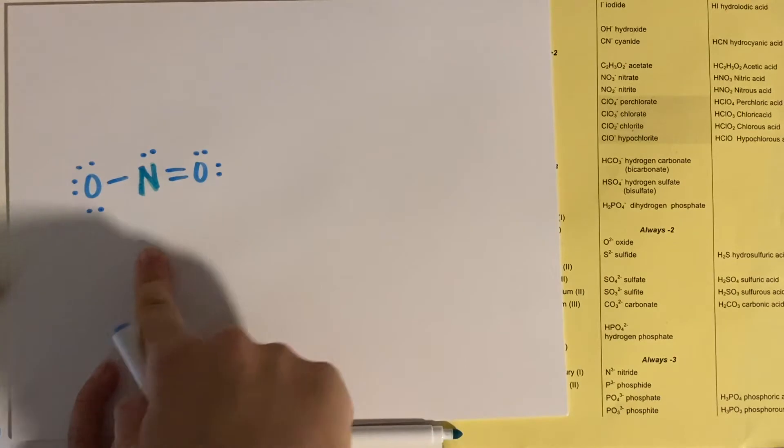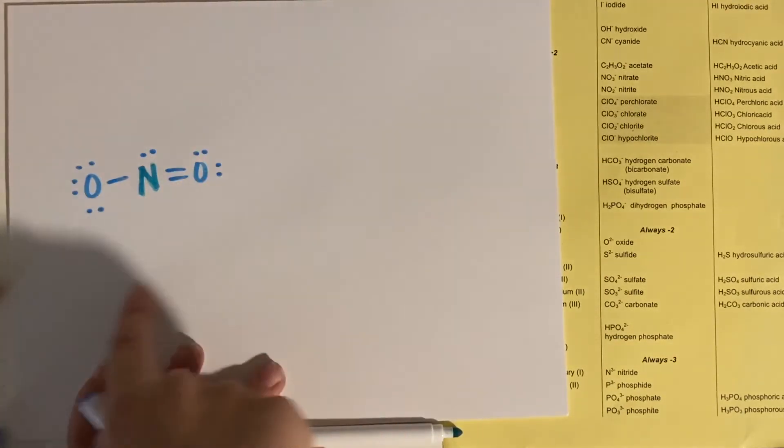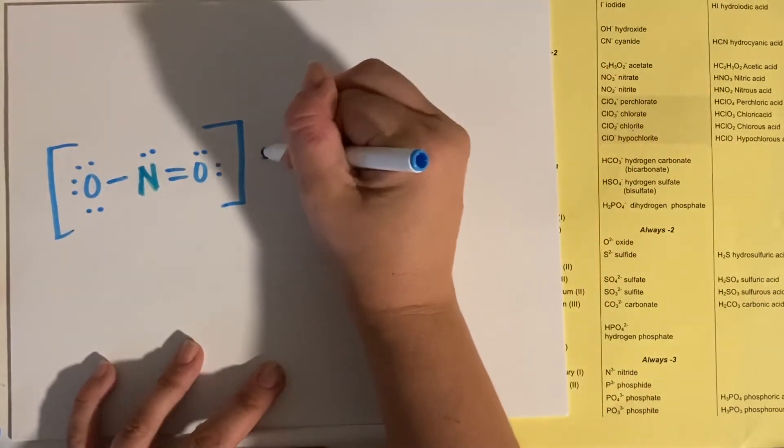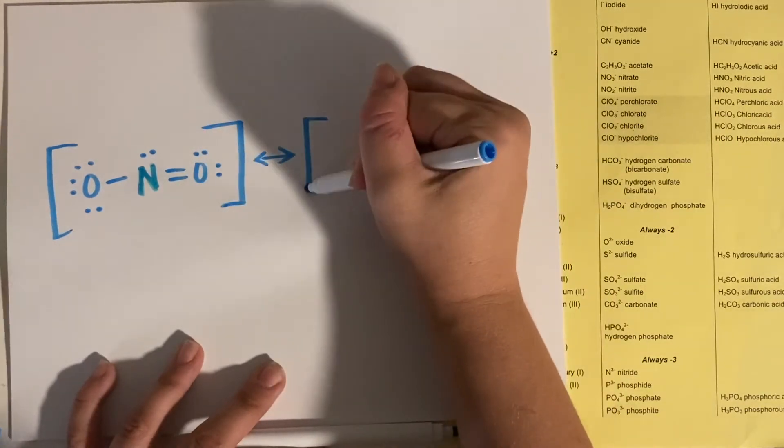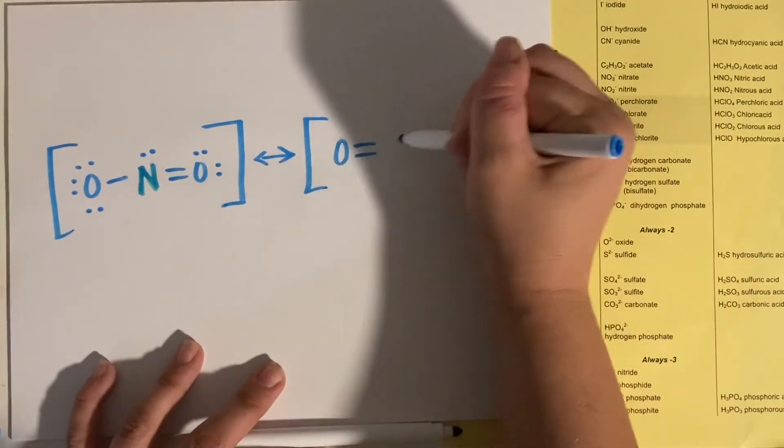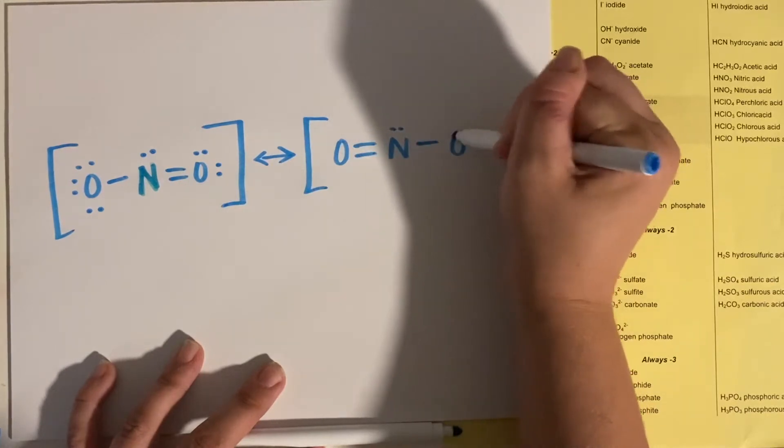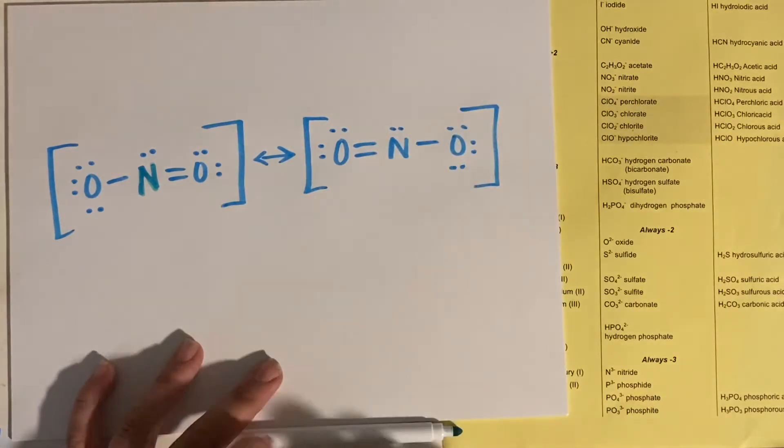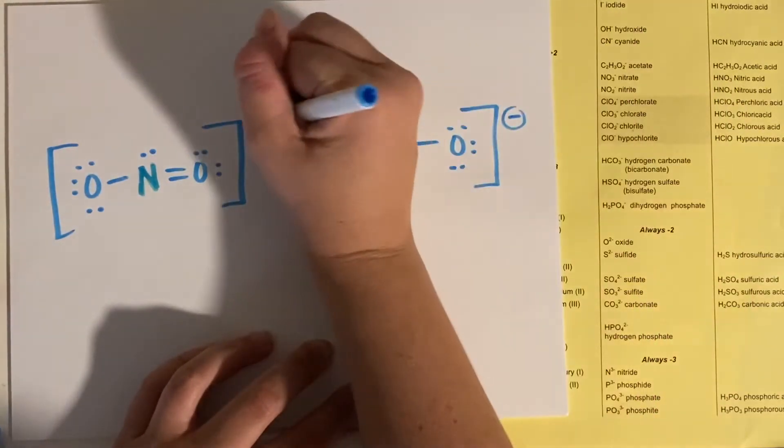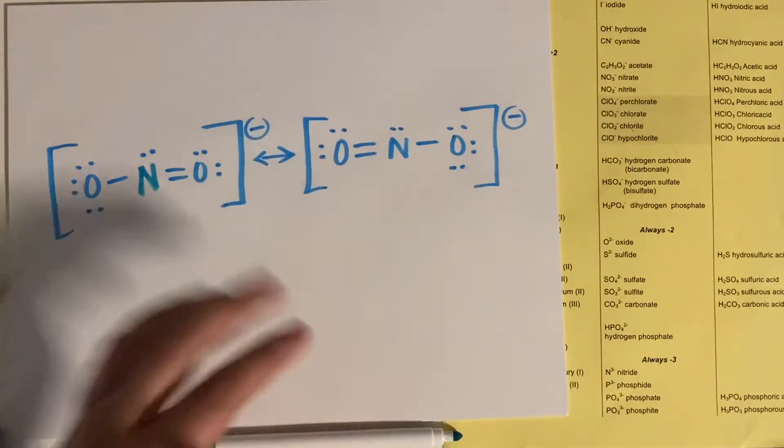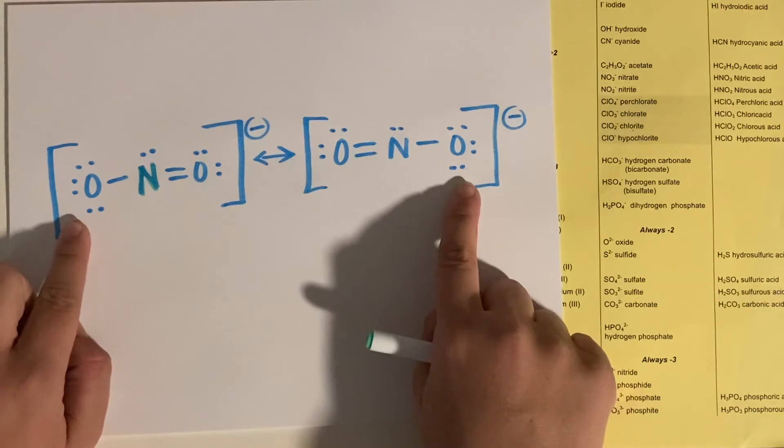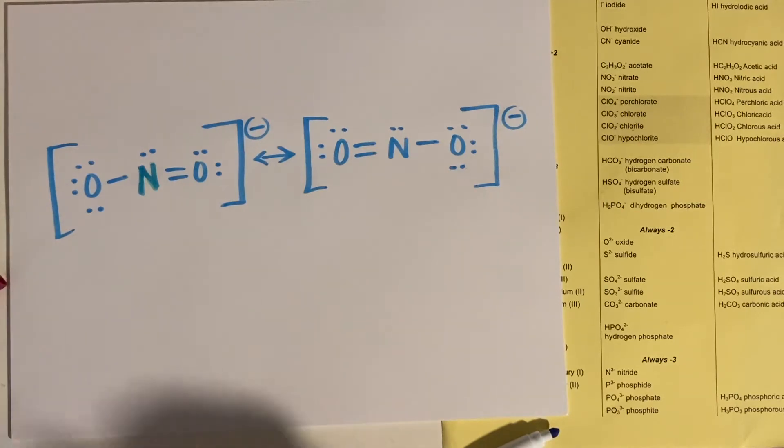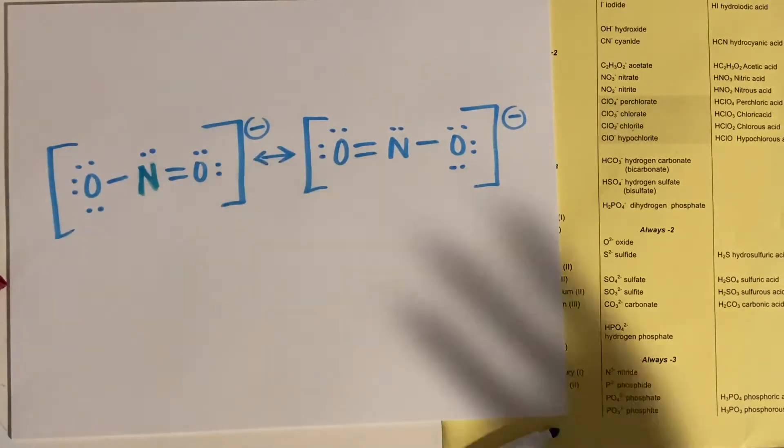So one of two ways you can draw this thing. You can draw it like this. So you have this one with this oxygen having the negative charge, you put brackets around it, and a little arrow showing that it's going to also have the option of having this oxygen have the negative charge.